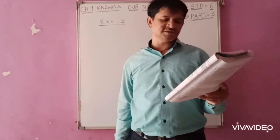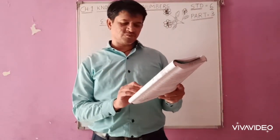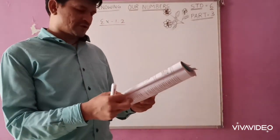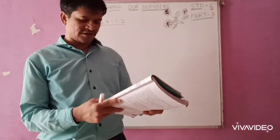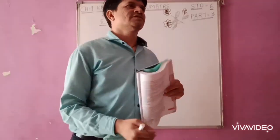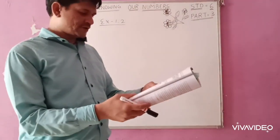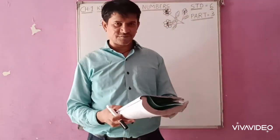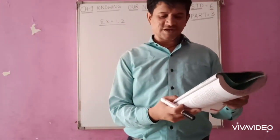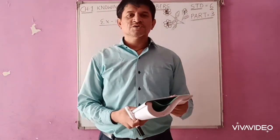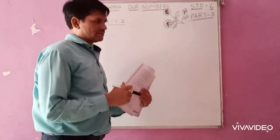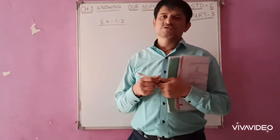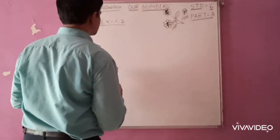Here it is. A book exhibition was held for 4 days in a school. The number of tickets sold at the counter on the first, second, third and final day was respectively 1,094, 1,812, 2,050 and 2,751. Find the total number of tickets sold on all 4 days. So how can you solve this problem? What are the statements you are going to write?